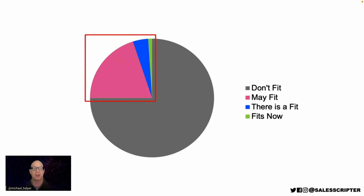Depending on where the prospect is, we can adjust how hard we pursue them or how much time we spend with them. If it's only possibly a fit, we still want to get engaged and stay in contact with that customer. It's qualifying that will help you figure out where the prospect sits in this pie and help you make good decisions regarding your time and minimizing opportunity costs.